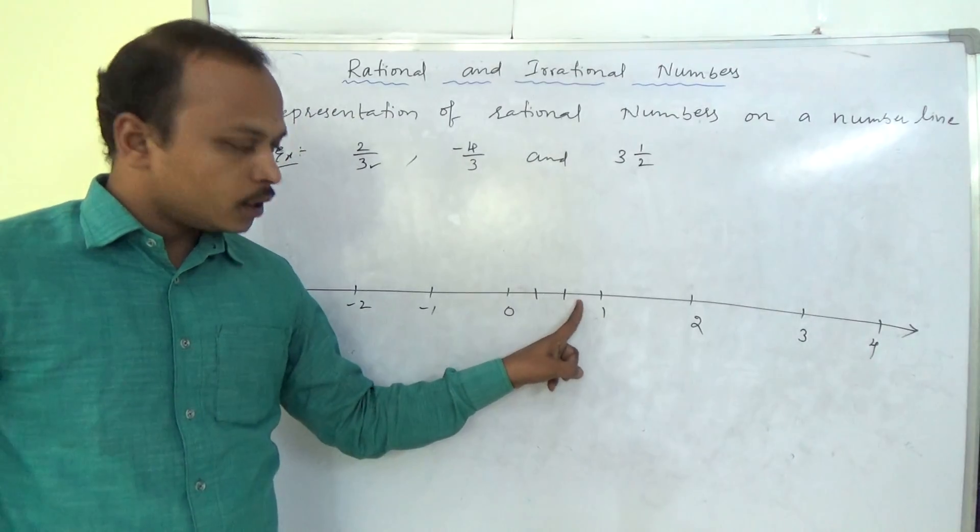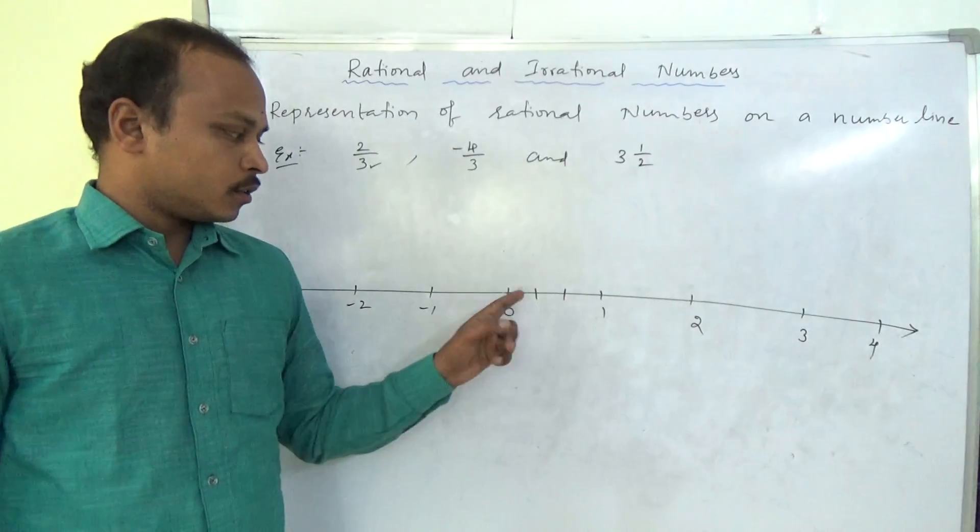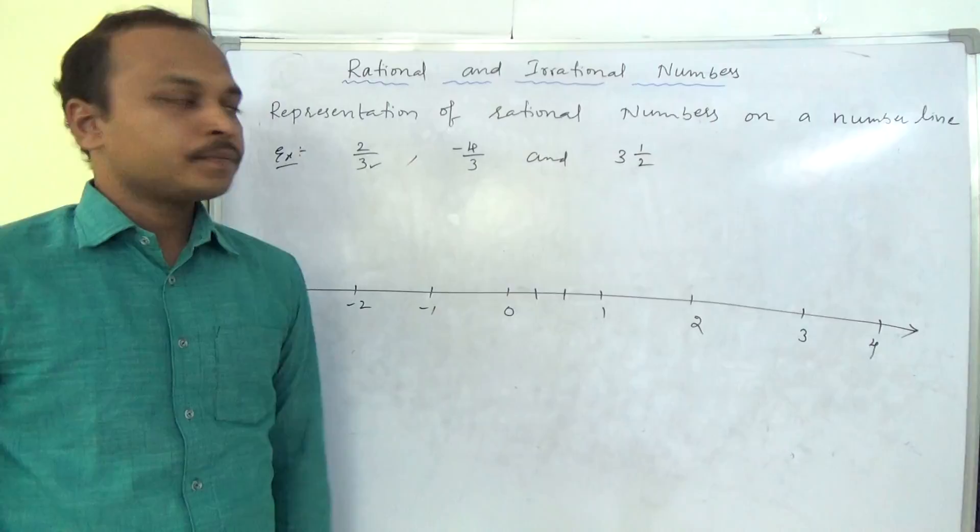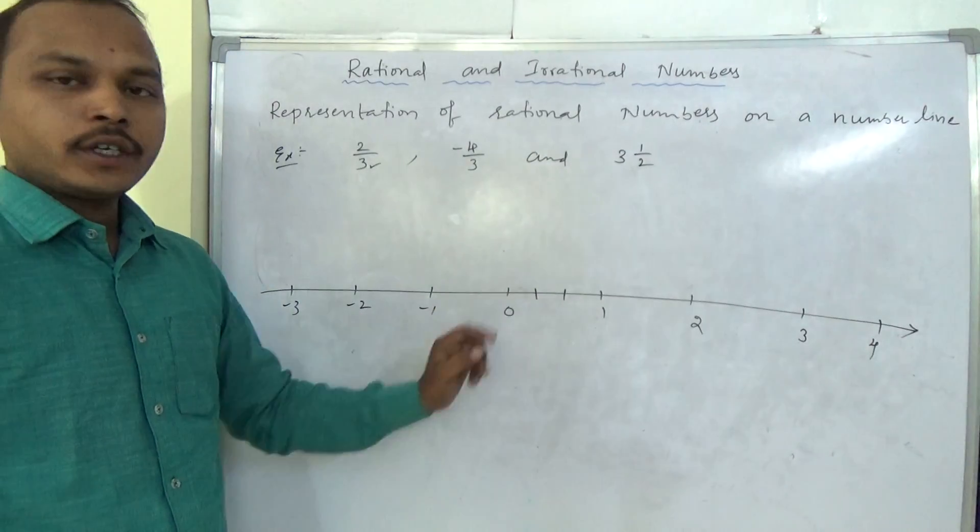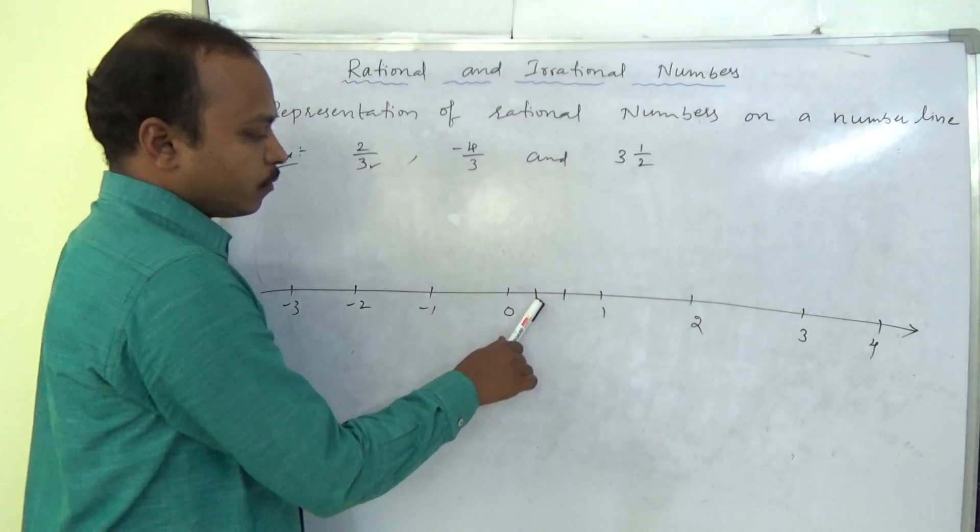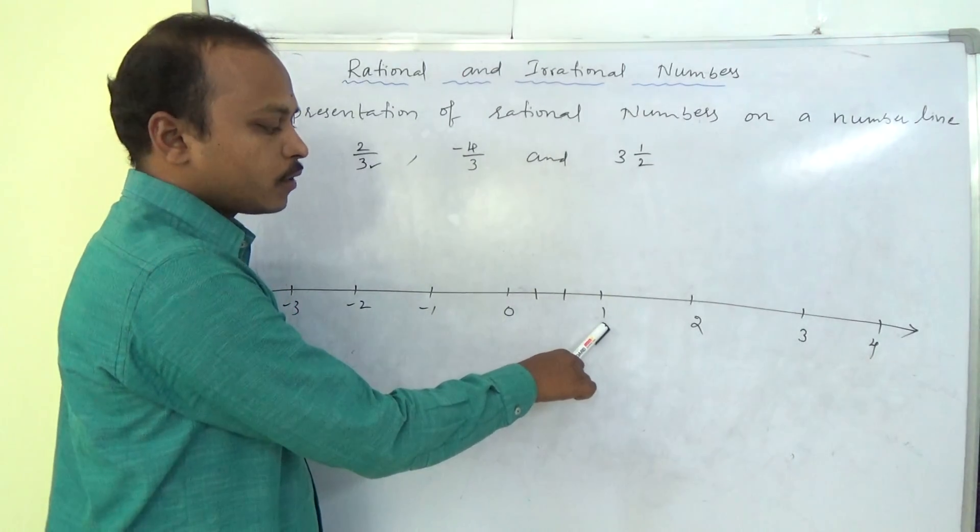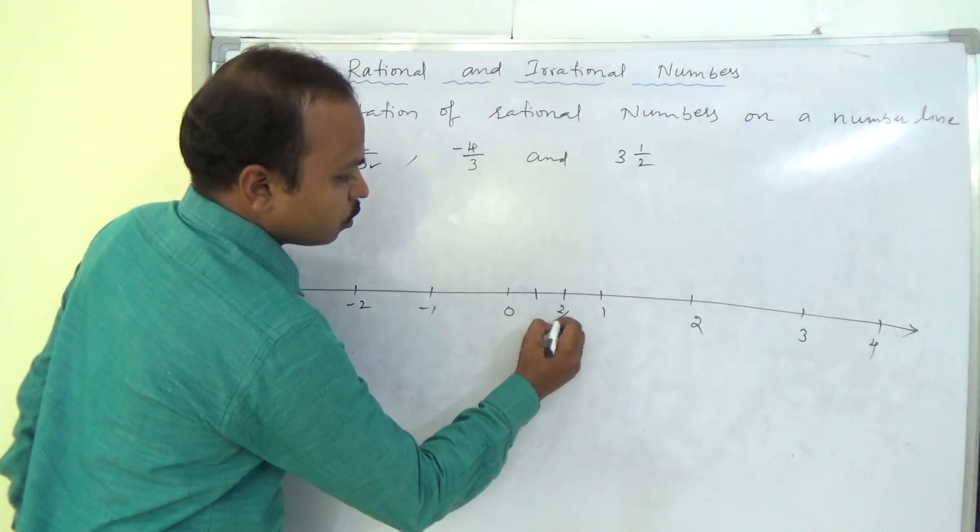1, 2, 3. Parts should be 3, not lines. You remember that. If you draw 2 lines, it becomes 3 parts. 2, 3rd. Now, after 0 it comes. This is 1, 3rd, 2, 3rd and 3, 3rd. That means 3 by 3 is 1. So now this is in this second part is 2 by 3.